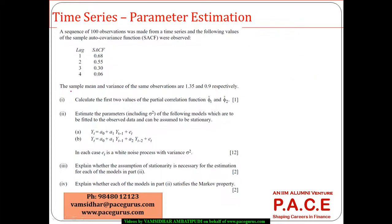That's the first question directly solved. Now, estimate the parameters including σ² of the following models to be fitted to the observed data, which can be assumed to be stationary. So there is an assumption of stationarity, which means I can use the Yule-Walker equations. Taking the first model: yt = a0 + a1·yt-1 + et.